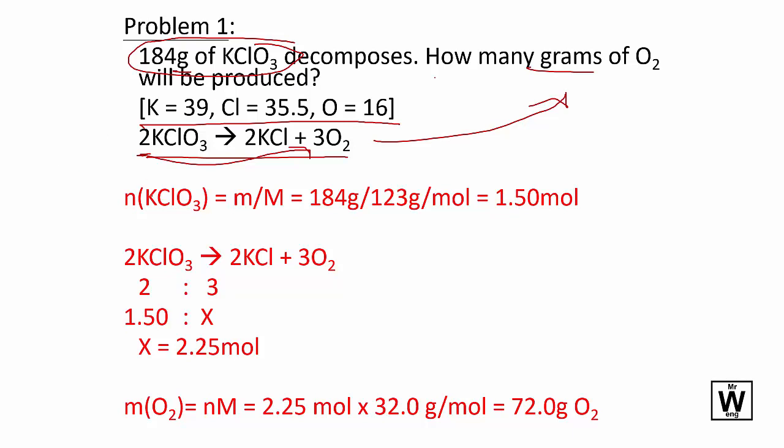Here's the labeled formula. We substitute the molar mass of potassium chlorate, so n(KClO3) = 184g/123g/mol = 1.50mol. The molar ratio is 2:3, and we have 1.50 of this, which gives us X.